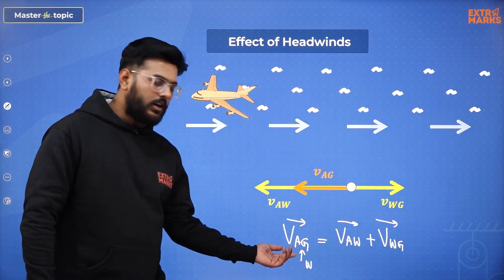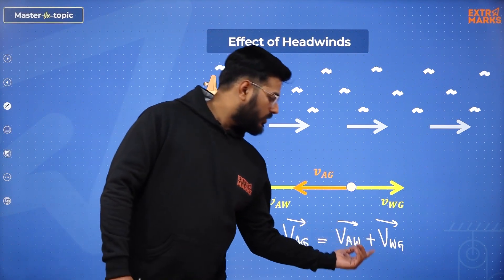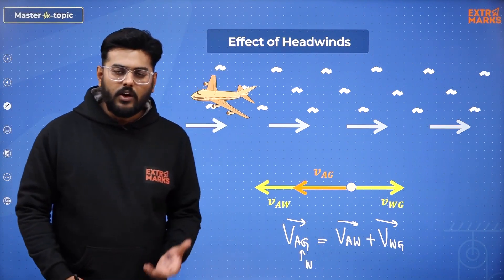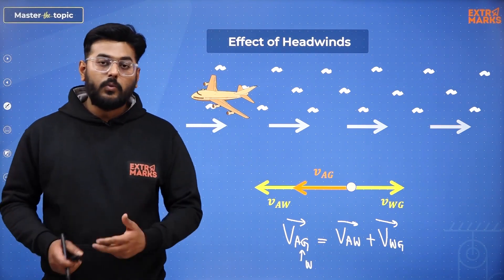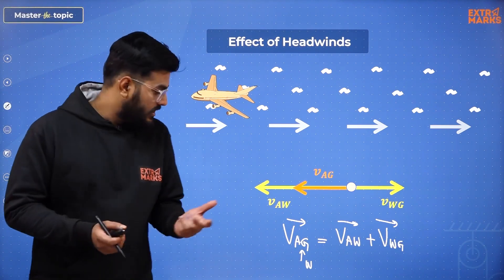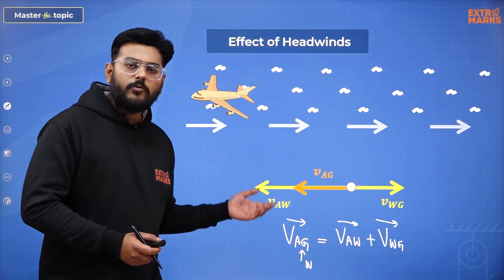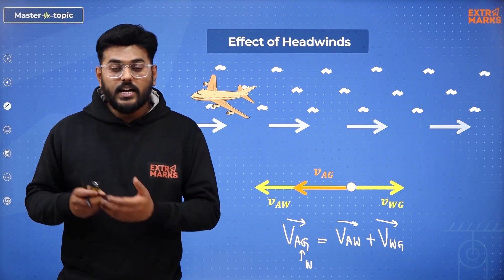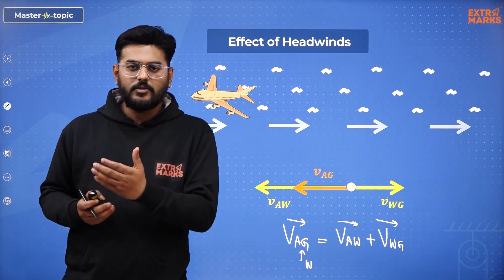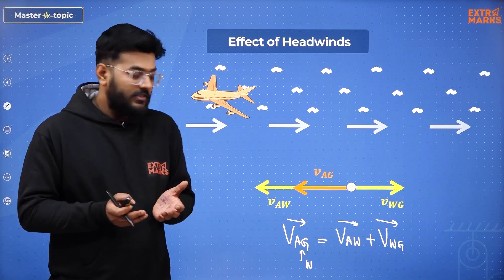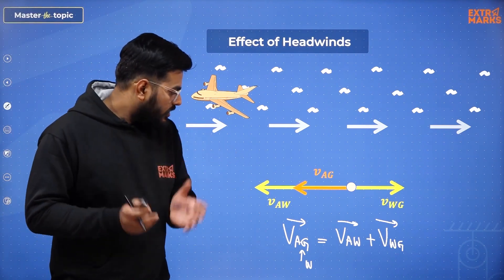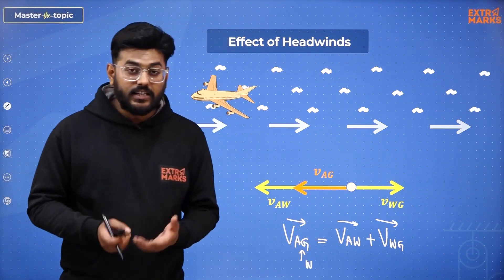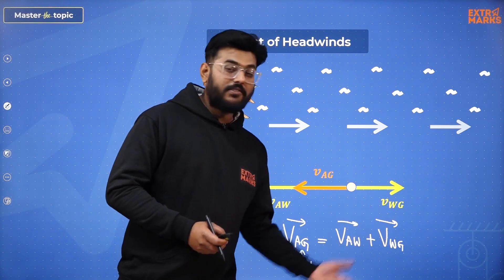To find velocity of aircraft with respect to ground, we need to vectorically add these two vectors. This analysis remains the same whether we talk about headwind, tailwind, or crosswinds. In each case, I will focus attention only on the velocity of the aircraft with respect to ground, because I am standing on ground and observing where this airplane is heading. In the case of headwind, the effective velocity gets reduced because of the negative effect of winds on it.